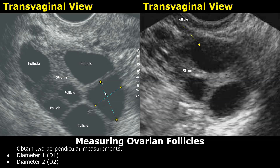Now we obtain two measurements at right angles to each other. The first measurement is diameter 1, or D1, which is the maximum diameter of the follicle. The second measurement is diameter 2, or D2, taken perpendicular to D1. These two measurements account for the fact that follicles are often oval rather than perfectly round. Both measurements must be taken on the same frozen image where the follicle appears maximal.